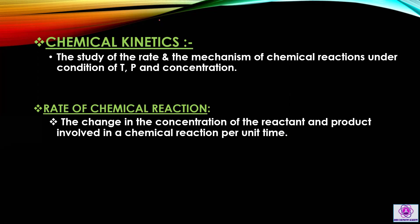A reaction has a rate — how does the reaction happen? In the first step, what is the intermediate compound? In the second step, what is the product? What is the rate of chemical reaction? The rate of chemical reaction is defined as the change in the concentration of the reactant or product per unit time.